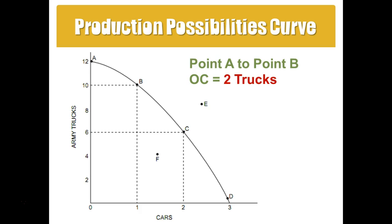In this world where there's just army trucks and cars, if I want to go from point A to point B, I'm going from no cars and 12 trucks to one car, but that means I have to give up some trucks. When I go from zero to one car, I go from 12 to 10 trucks. So the opportunity cost of one car would be two trucks.